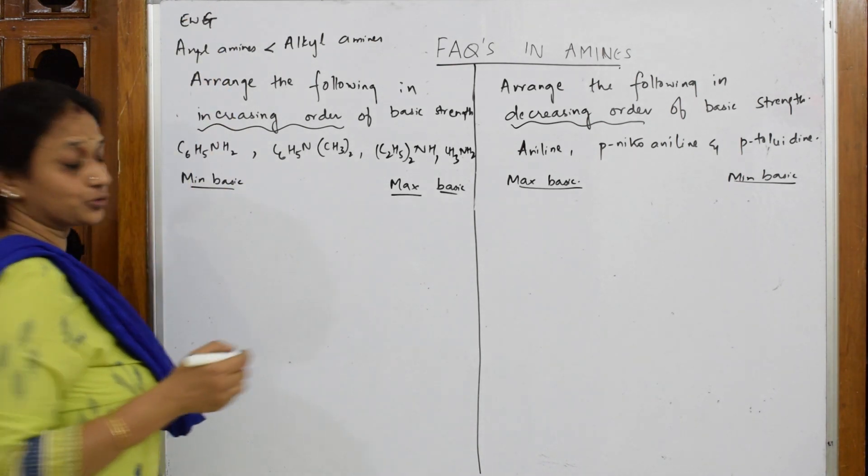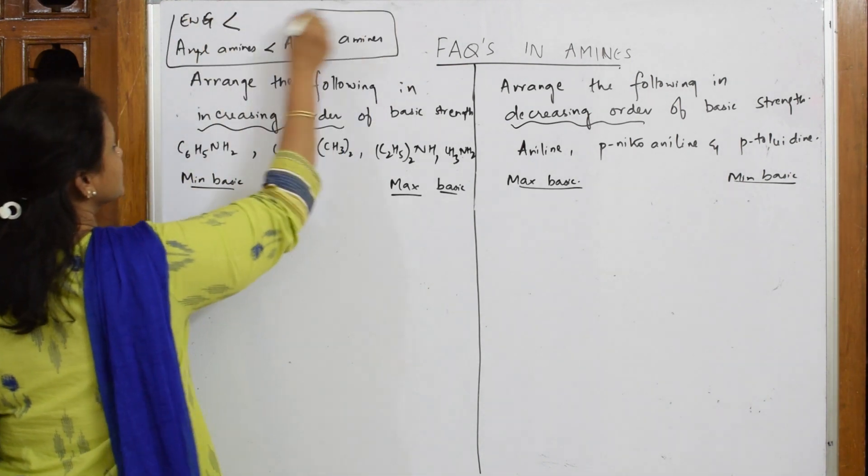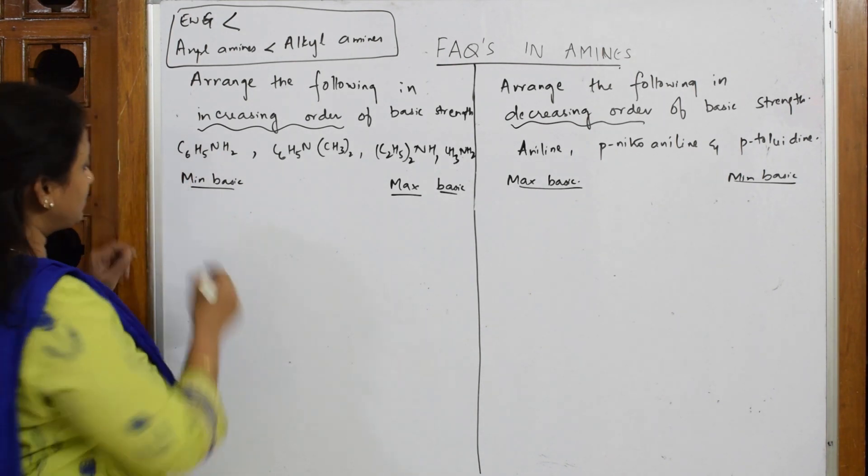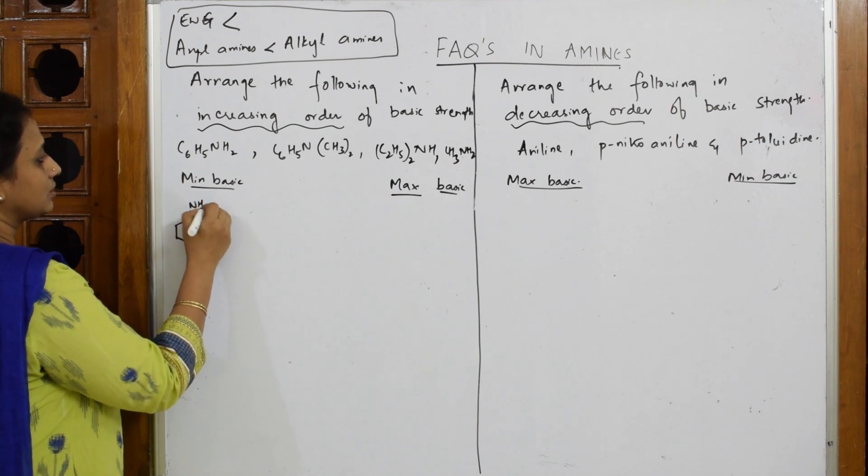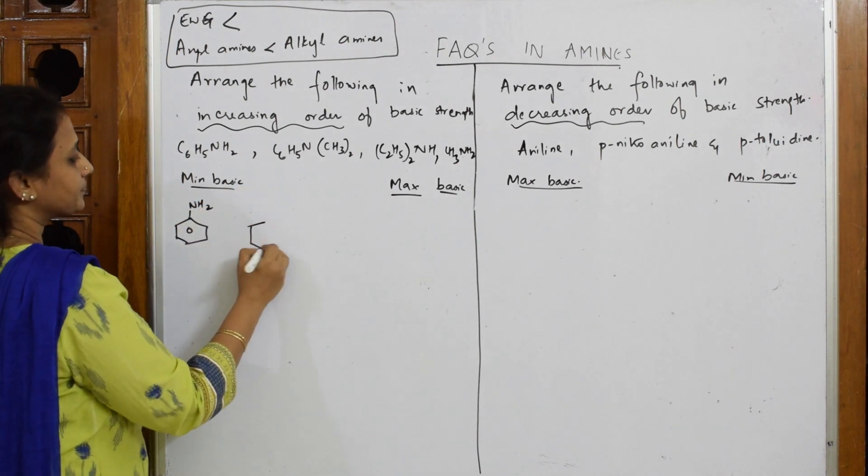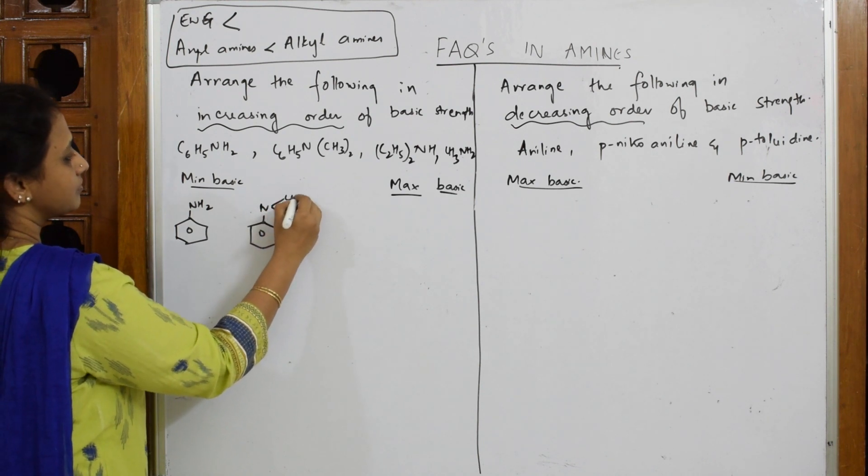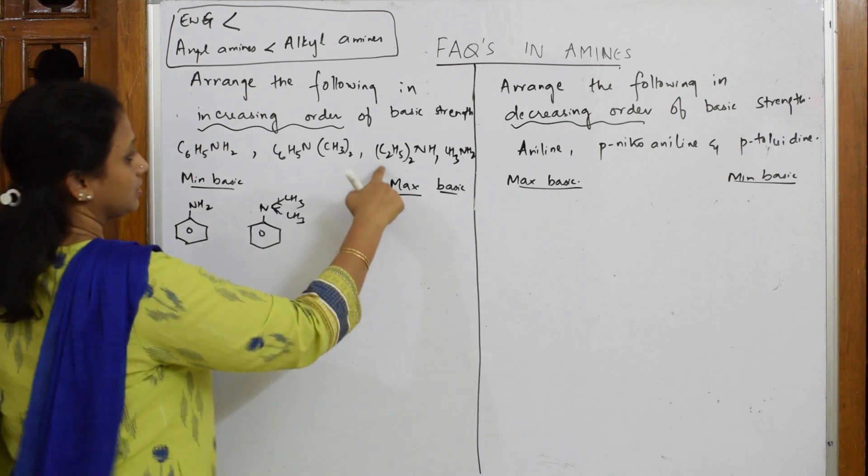like nitro groups, they're less basic than aryl amines. So this is the sequence. Let's start here: this is your aromatic ring. This one you have two alkyl groups donating in this compound.